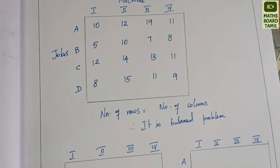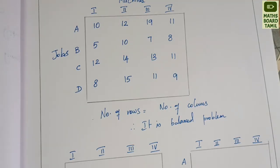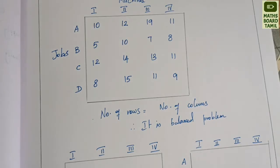There are 4 steps in the Hungarian method: row reduction, column reduction, row scanning, and column scanning. Then we check the total cost.